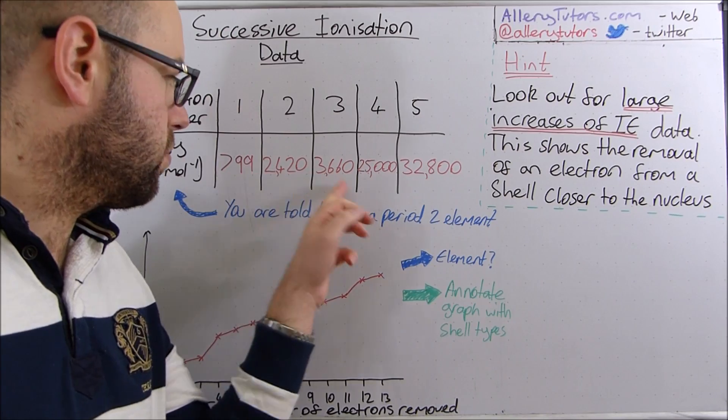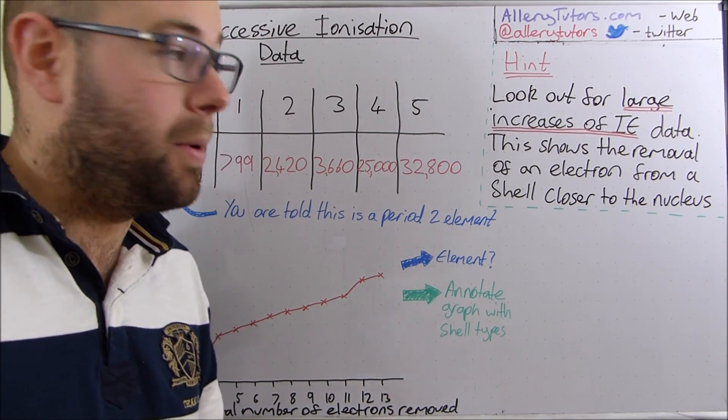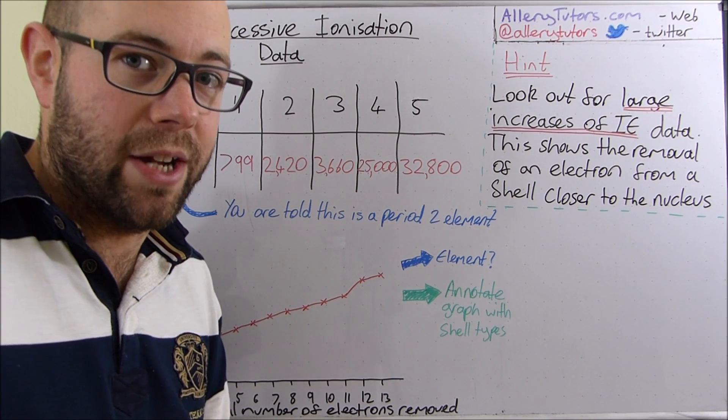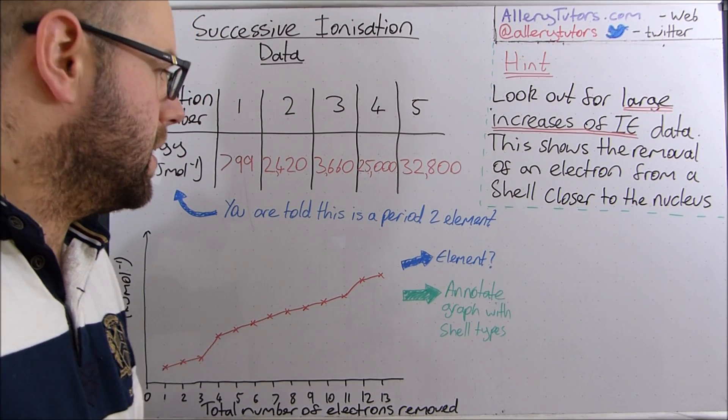So we've removed the first three, they must be in the same shell because the energies are similar, but the massive jump comes from the fourth electron, so this must be from a shell close to the nucleus. So all we have to do is,